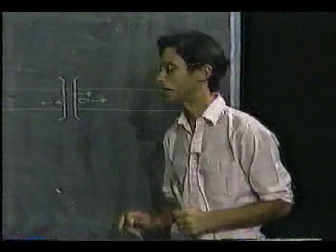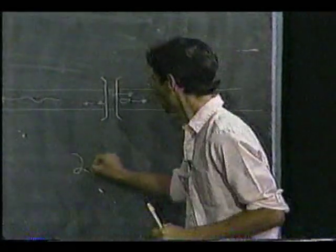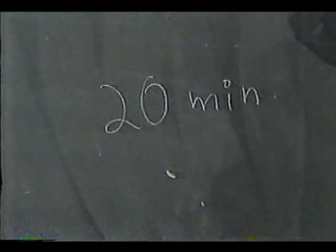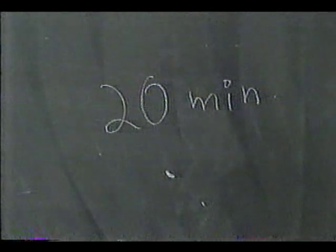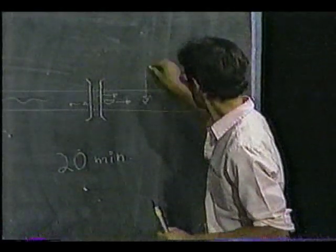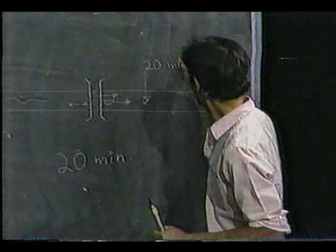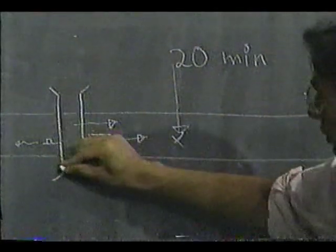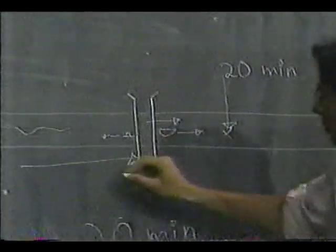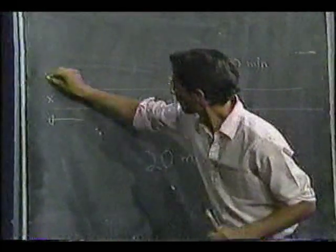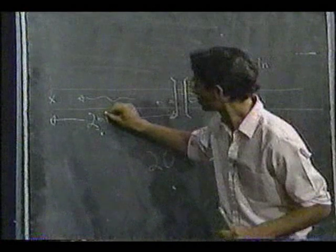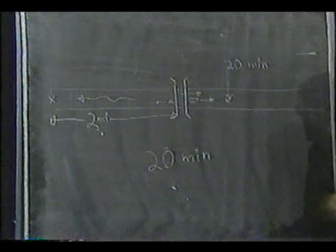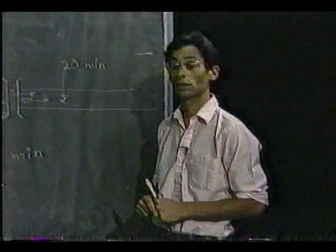Now take note of the fact, the only numerical fact we've stated here is 20 minutes corresponding to when he notices his hat is missing, and the two miles corresponding to the distance from the bridge where he catches up with his hat. And from these facts we're asked to figure out how fast the current is flowing.